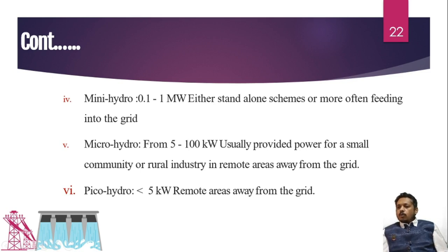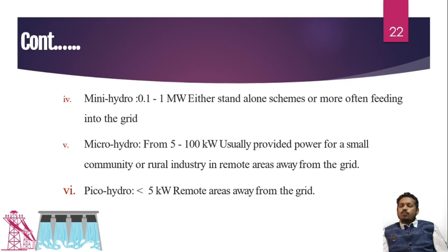Next is the pico hydro power plant — a plant with capacity less than 5 kilowatts. This also fulfills the demand of some remote region population where we cannot place transmission lines, or where it would be very costly to do so. So we can install this type of power plant. These are the six different types of power plant according to capacity.